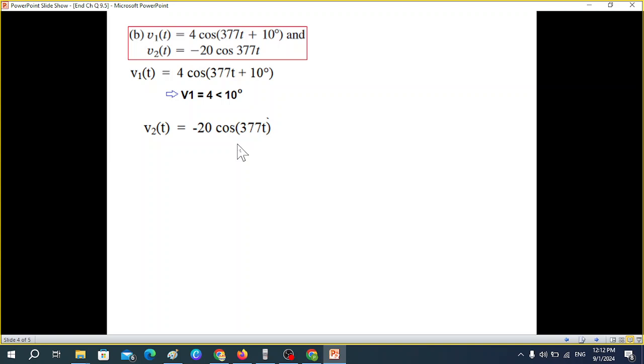The second one v2(t) = -20 cos(377t) has a negative sign. And we have discussed earlier also that negative sign can be represented by adding plus 180 or minus 180 with the angle. So let's add plus 180. So by adding plus 180 the negative sign goes. And from here we can write it into phasor form. So the magnitude and the angle.